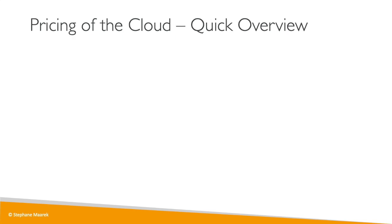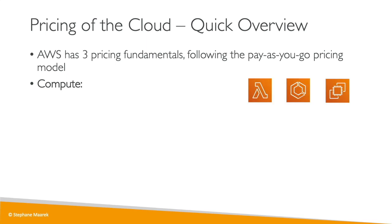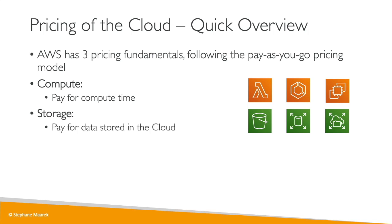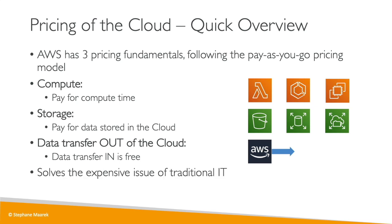The clouds have different flavors, but one thing in common is that the pricing is very different from what you know. AWS has three pricing fundamentals and follows the pay-as-you-go model. For compute, we pay for the exact compute time. For storage, we pay for the exact amount of data stored in the cloud. For networking, we only pay when data leaves the cloud — any data going into the cloud is free. This solves the expensive issue of traditional IT, because now we only pay for exactly what we need, giving us huge cost savings. That's it for this lecture; in the next lecture we'll have a deeper dive on AWS.